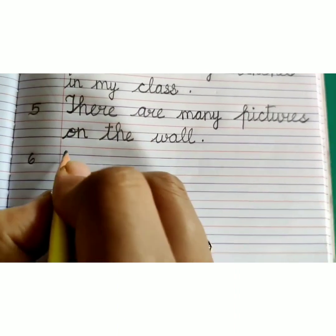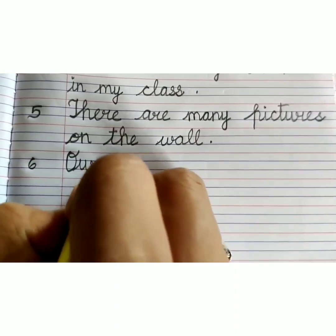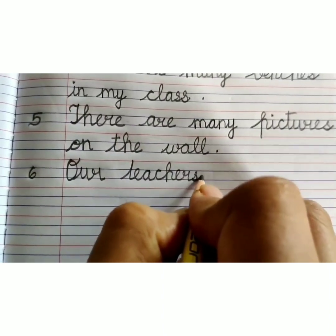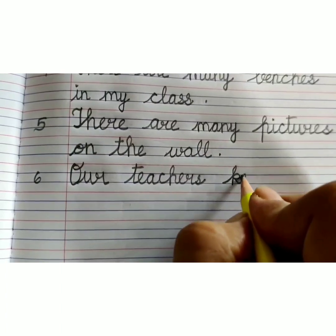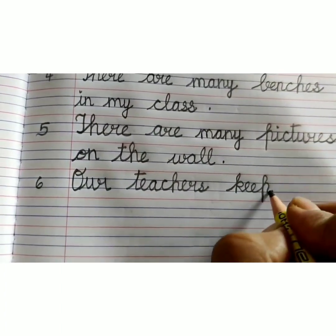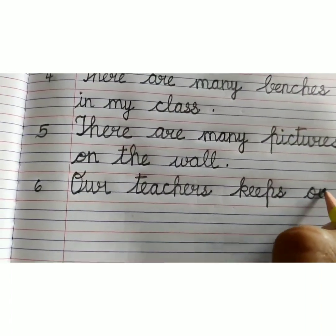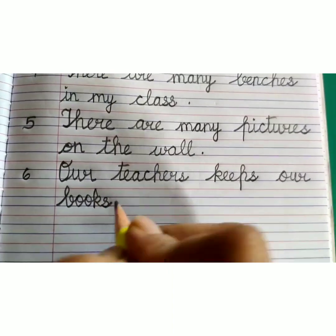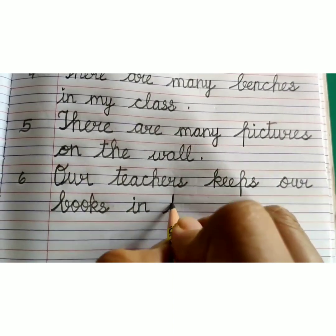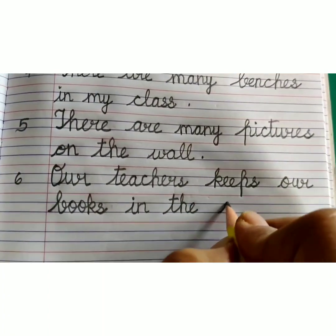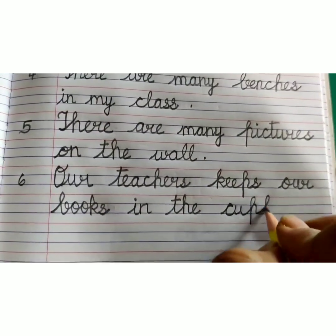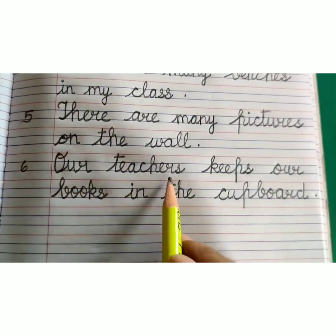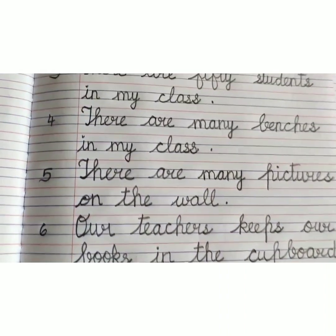Number 6. Near the margin, O-U-R. Our T-E-A-C-H-E-R-S, teachers, K-E-E-P-S, keeps. Our. In next line, B-O-K-S, books, I-N, in, T-H-E, the, C-U-P-B-O-A-R-D, cupboard. Full stop. Our teacher keeps our books in the cupboard.